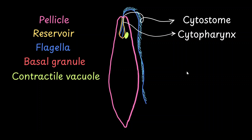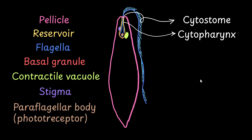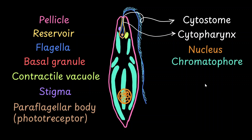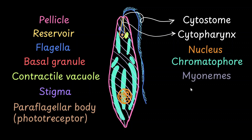Euglena has a single contractile vacuole, a stigma, and a paraflagellar body, which is the photoreceptor that controls how the flagella move and overall how the organism moves. It also has a nucleus with chromatophores around it, and myonemes — locomotory proteins found just below the pellicle. We also observe the presence of paramylum, which are carbohydrate reservoirs within the euglena.